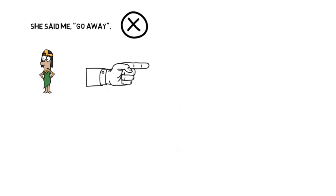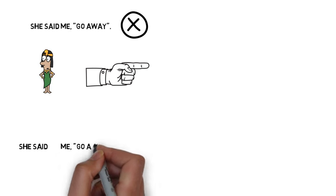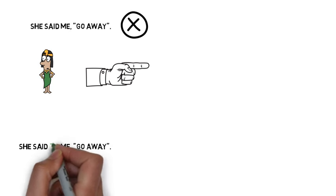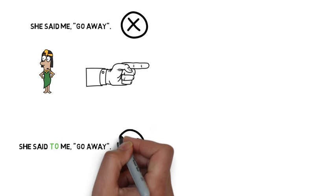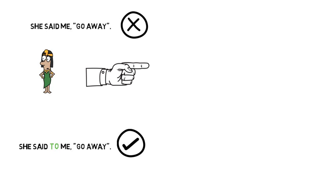What is it like then? Look here. She said to me, go away. That's correct. You use to in this instance with say.